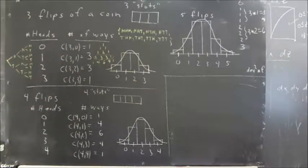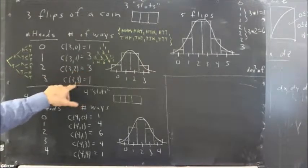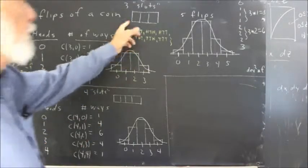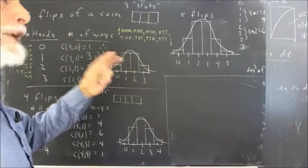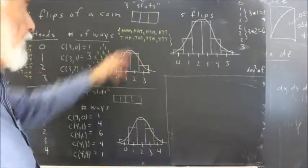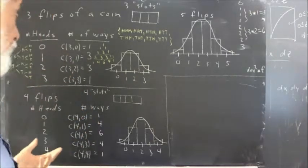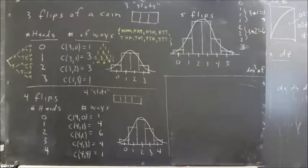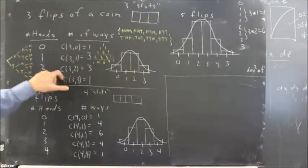These numbers give us one interpretation of the combination formula. C(3,0) is 1, C(3,1) is 3, C(3,2) is 3, C(3,3) is 1. We know these are the combinations because, for example, to get two heads we have to pick two of the three positions in which to put heads. There are three possibilities for the first position and two for the second, giving six possibilities in order; divide by the two ways they could appear in different orders. That's all been explained and is on video. So there is one way to get no heads, three ways to get one, three ways to get two, one way to get three.